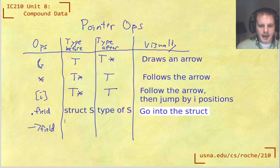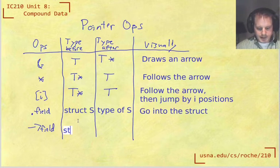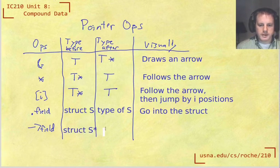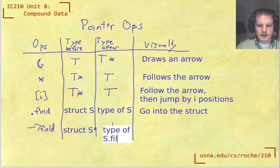And finally, the arrow operator, what does the type have to be for that to apply? That has to be a pointer to a struct. So struct s star would be that pointer type. And the result is the same as before, it's the type of s dot field.